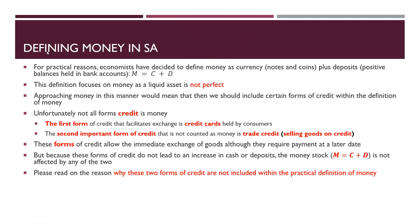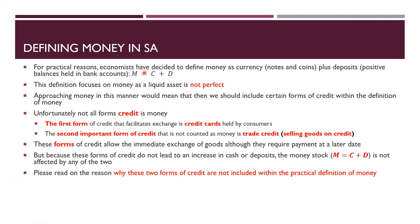For practical reasons, economies have defined money as currency — notes and coin — plus deposits, which are positive balances held in bank accounts. So M (money) equals cash, which is currency in circulation, plus deposits. This definition focuses on money as a liquid asset. However, it is not perfect, because approaching money in this manner would mean we should include certain forms of credit within the definition of money.